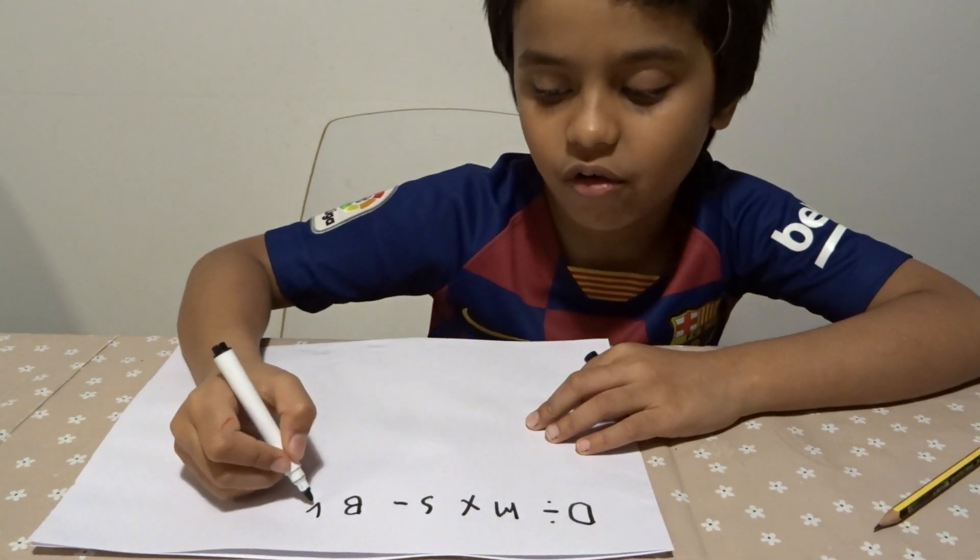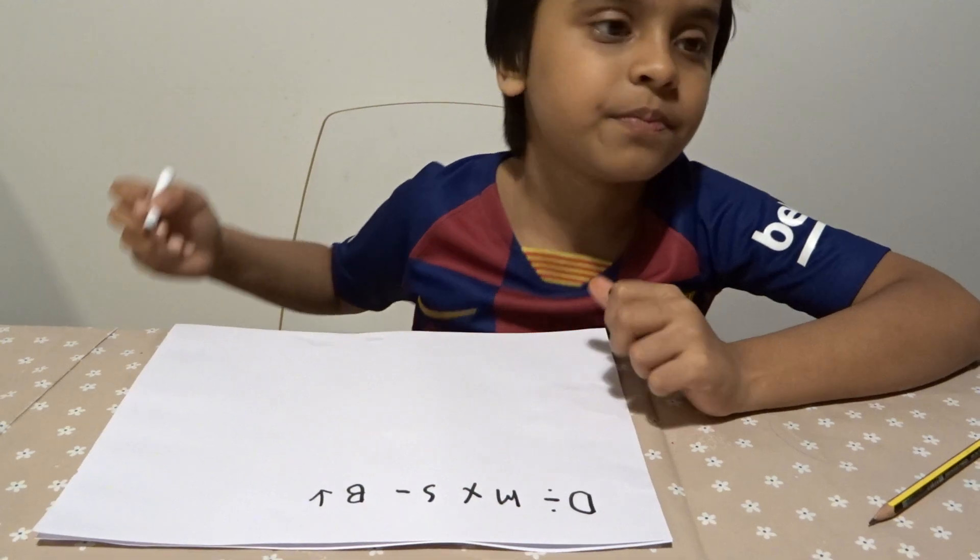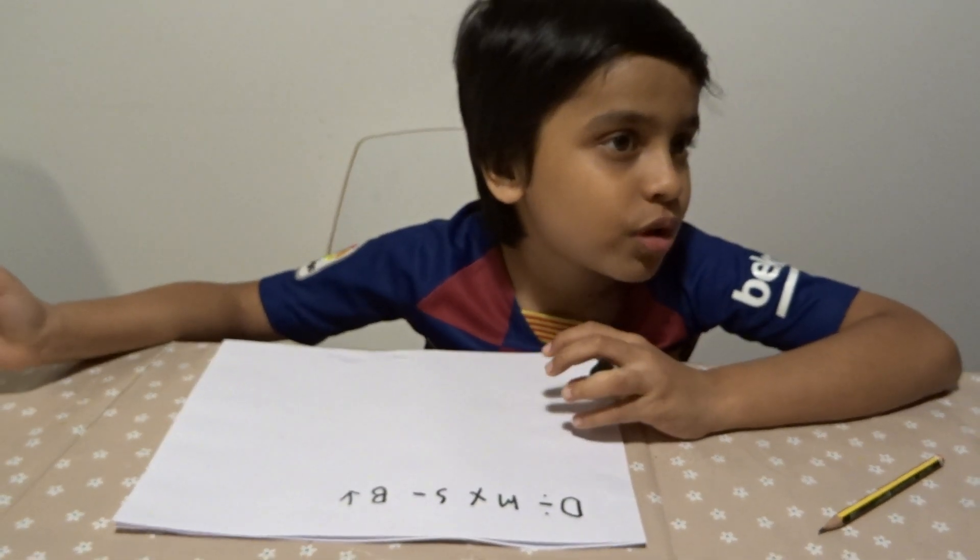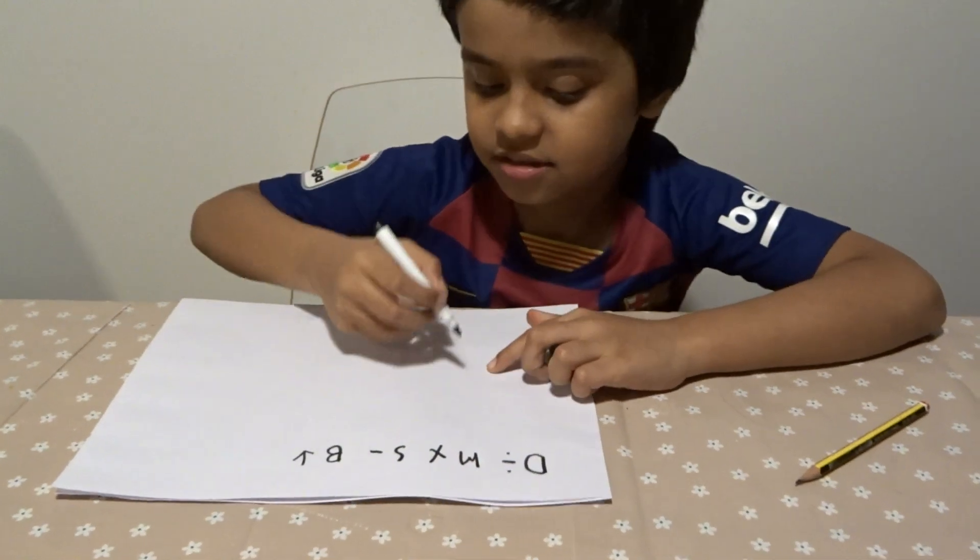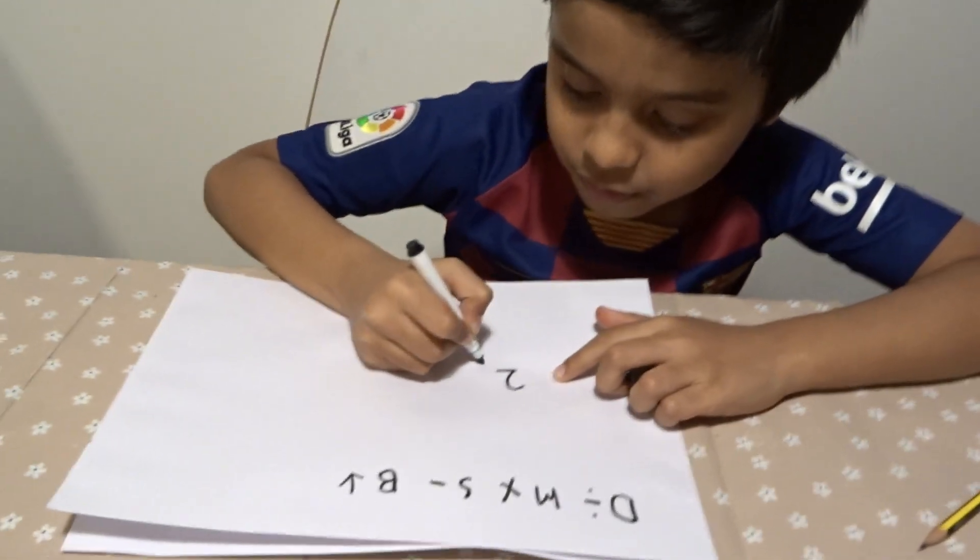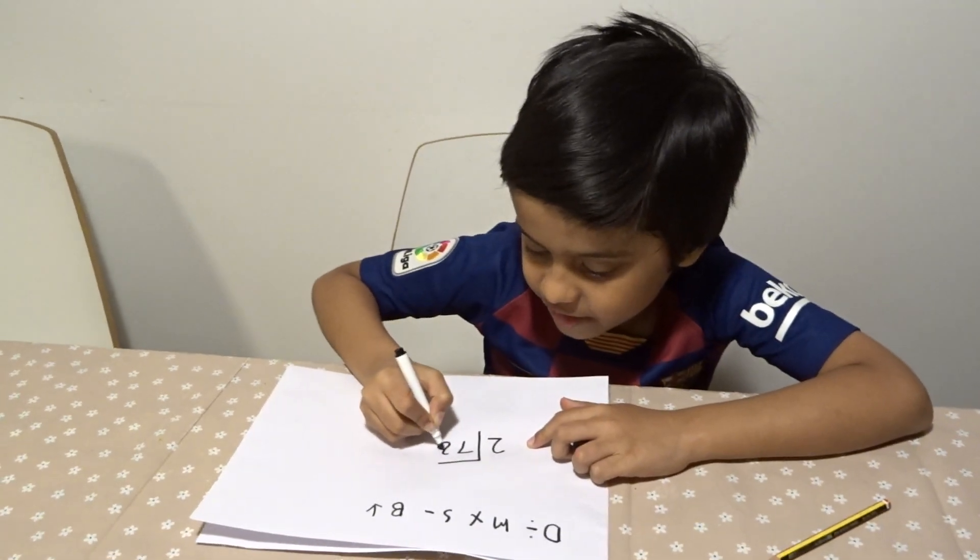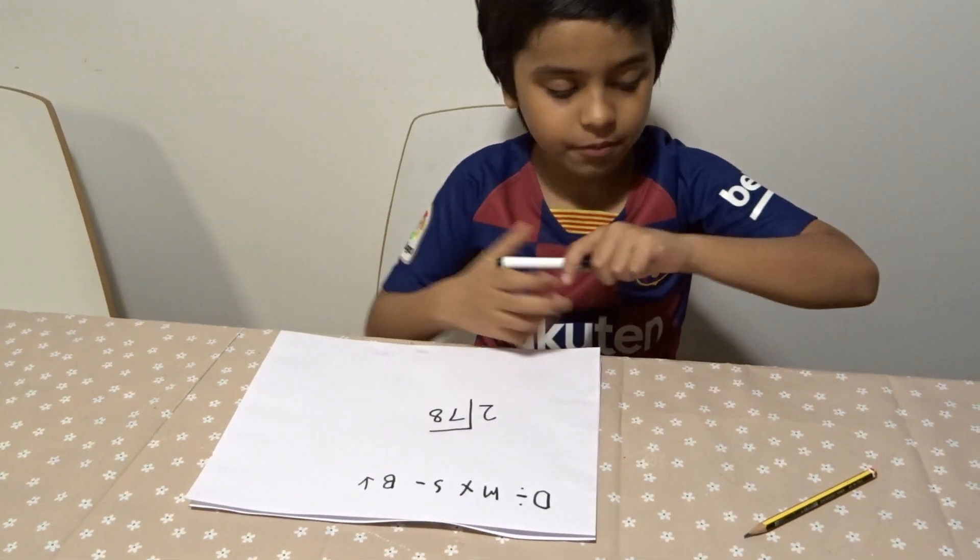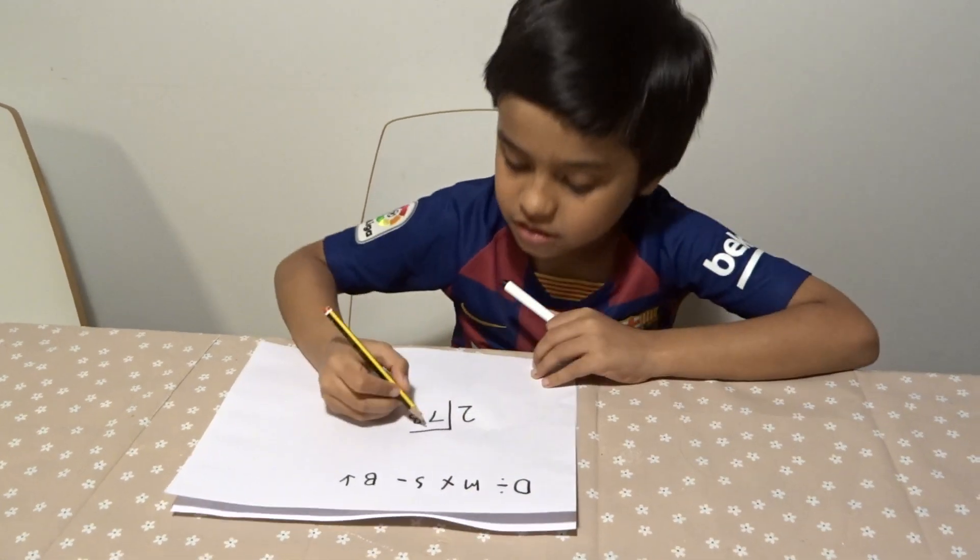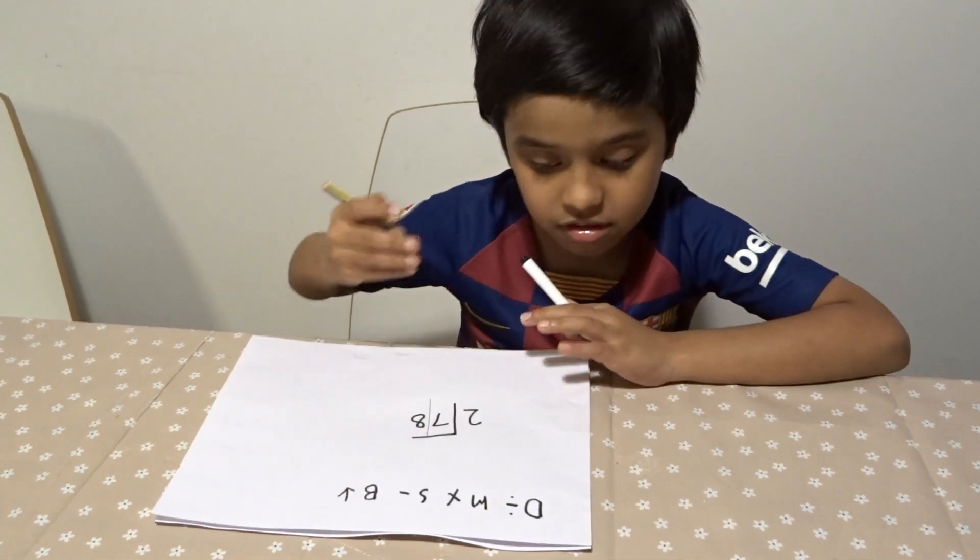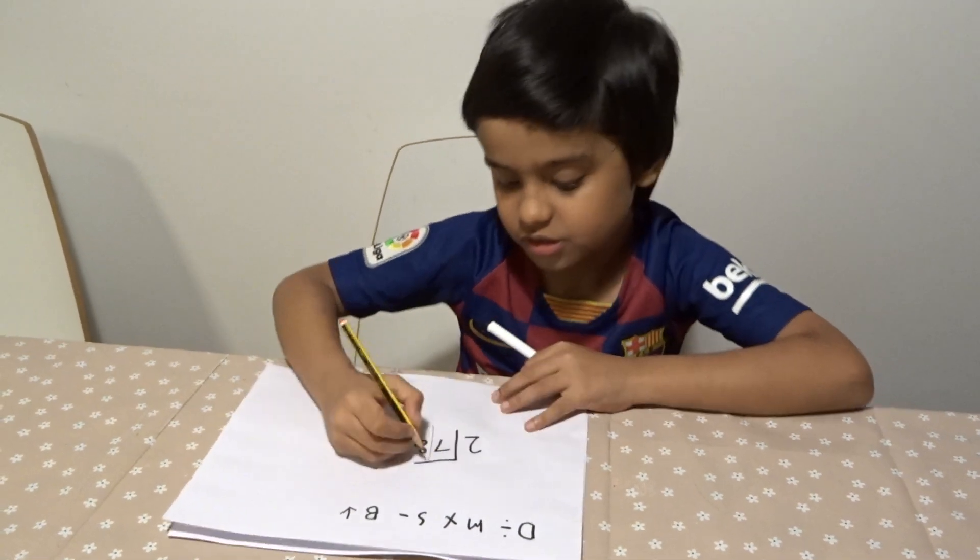Let's start. For example, two and seventy-eight. 78 divided by 2. I'm going to do it with a pencil because it's a little bit easier.